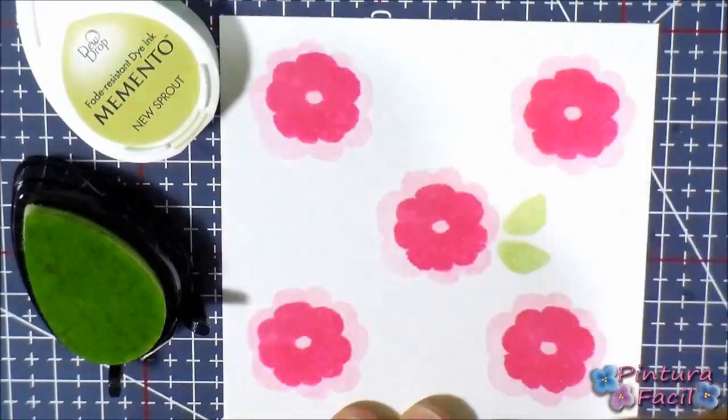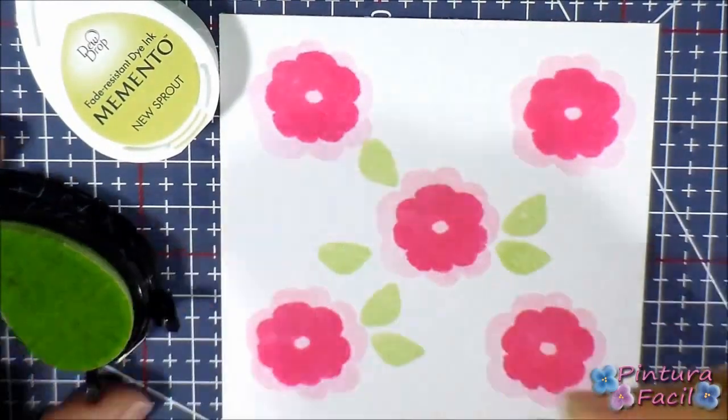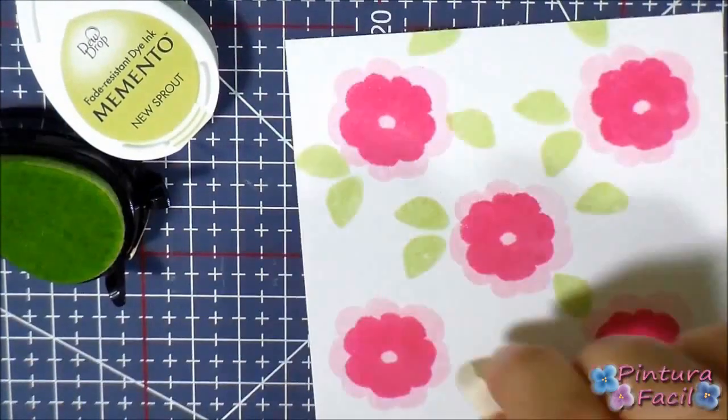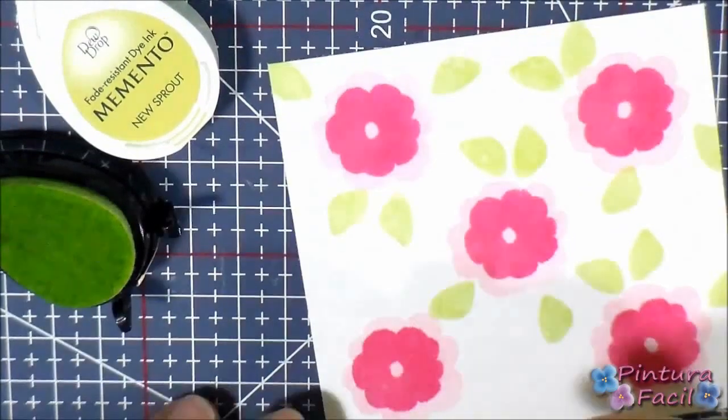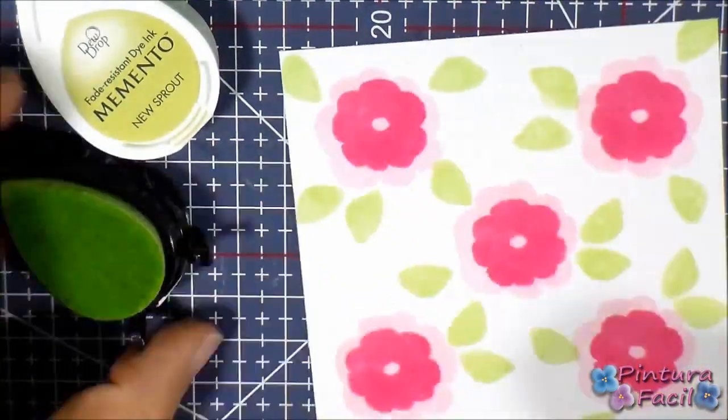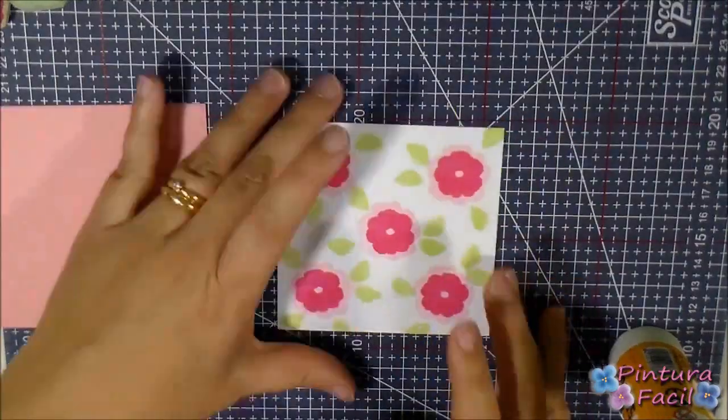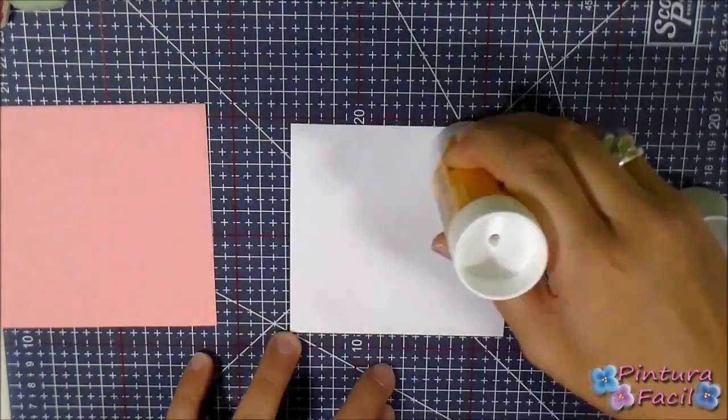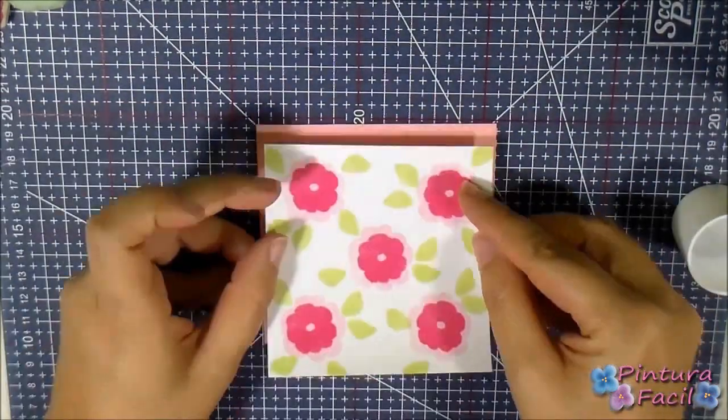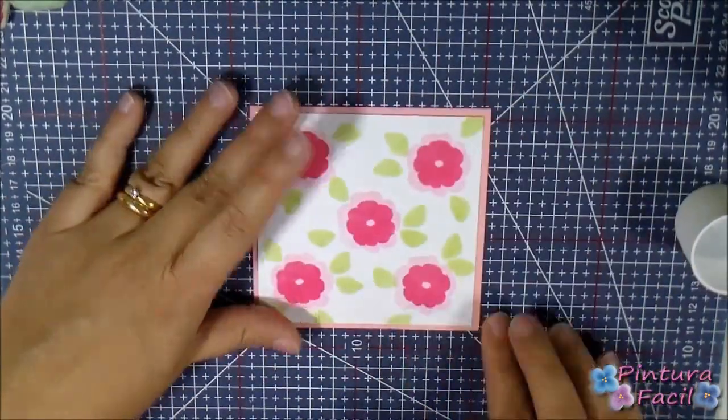Using light green ink, stamp leaves around the flowers. Glue the flower square on top of the pink one, and then this one on top of the green one.